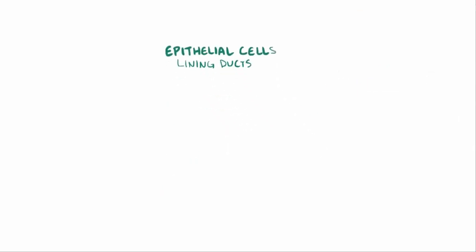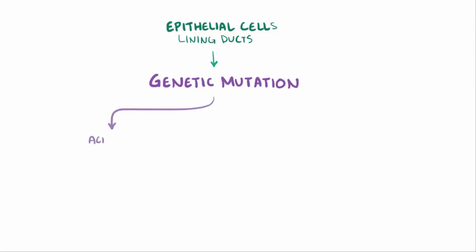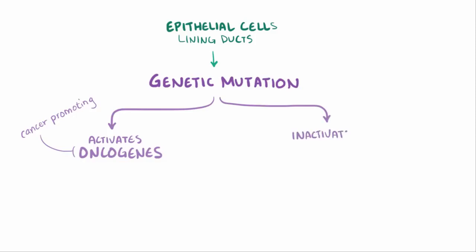Generally, pancreatic carcinoma is caused by genetic mutations in the ductal epithelial cells. These mutations might activate oncogenes, which promote cancer, or inactivate tumor suppressor genes.